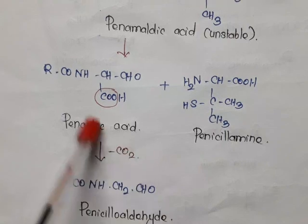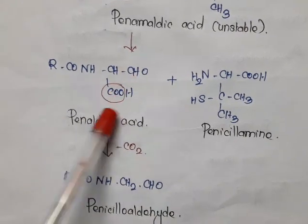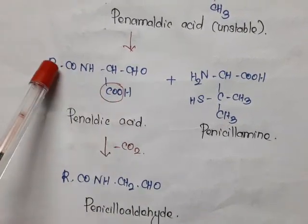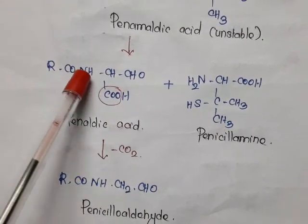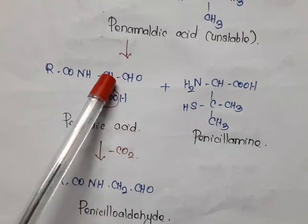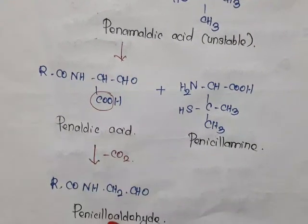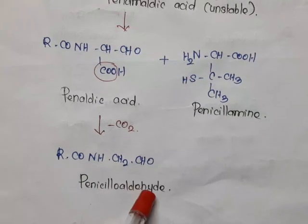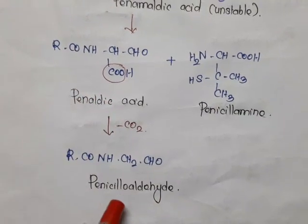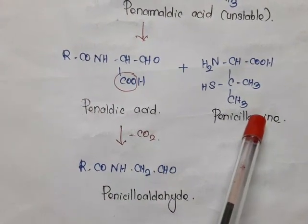So in method 2, the degradation pathway gives penicillinic acid → penamaldic acid → penaldic acid + penicillamine, and on decarboxylation of penaldic acid we get penicilloaldehyde. The final products of method 2 are penicilloaldehyde and penicillamine.